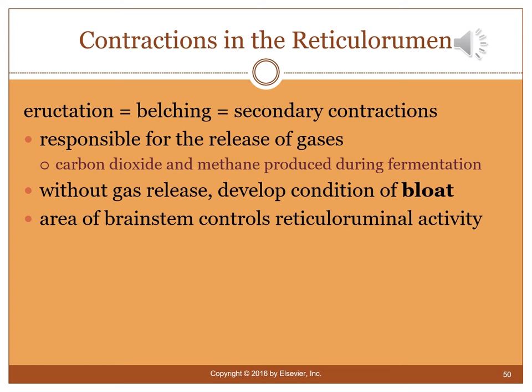The fermentation of cellulose and hay produces large amounts of carbon dioxide and methane gas. Ruminants must expel this gas through two routes. Eructation (burping) releases gas from the mouth. If gas builds up excessively — similar to bloat or GDV in dogs — the animal may need to be trocarized to release the gas before it causes major damage to the stomach.